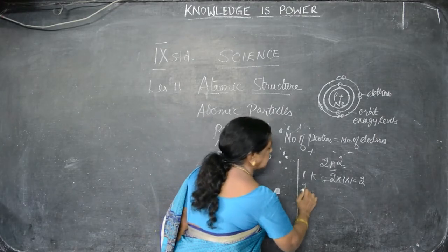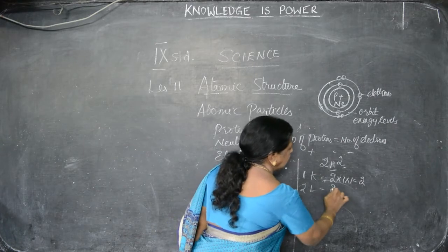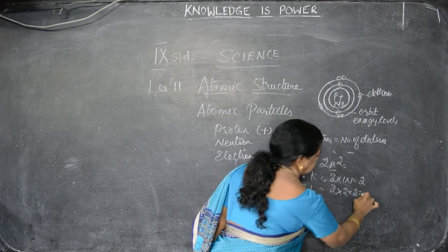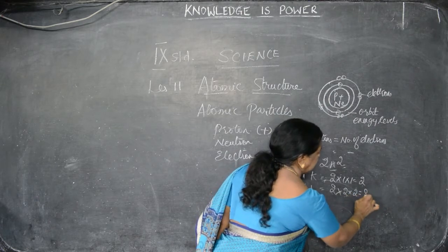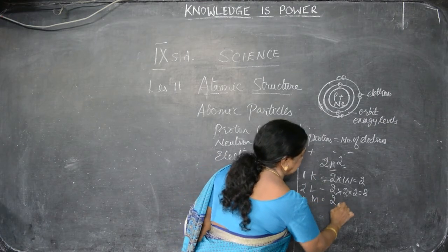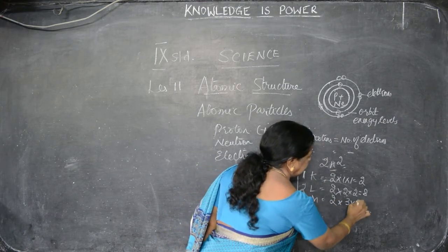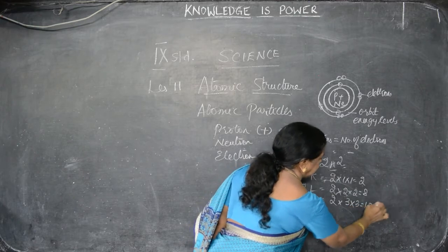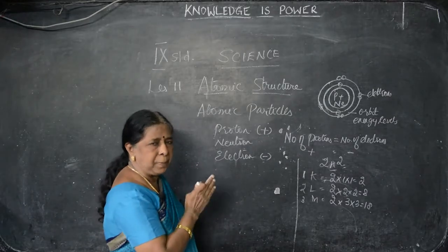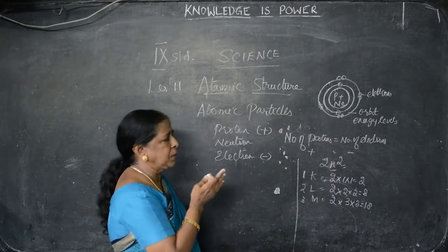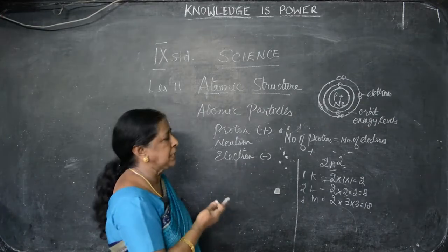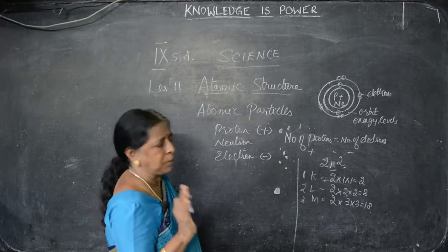The second orbit is L. Here n = 2, so n² = 2×2 = 4, and 2×4 = 8. For the third orbit M, n = 3, so n² = 3×3 = 9, and 2×9 = 18. Like that we have to arrange the electrons according to the formula 2n². This is the formula to arrange the electrons in the orbits.